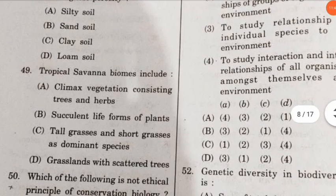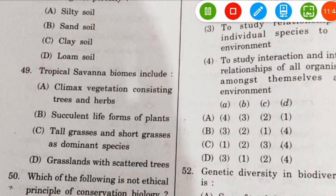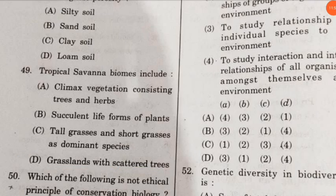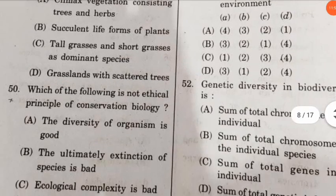Question 49: what do tropical savannah biomes include? The correct option is option D — tropical savannah biomes include grasslands with scattered trees.